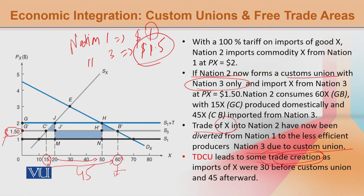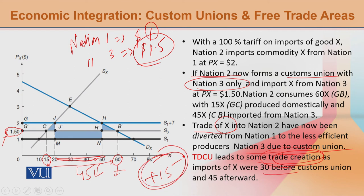But some trade creation has also occurred. The trade that was 30 has now become 45. So you can say that due to the custom union, 15 more commodities are being traded — moving more between the custom union members. So ultimately, the trade-divergent custom union has also created some trade, and that creation is plus 15.